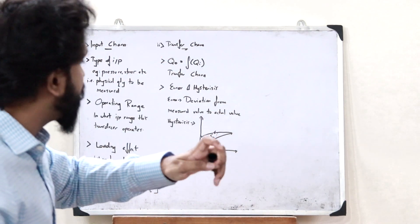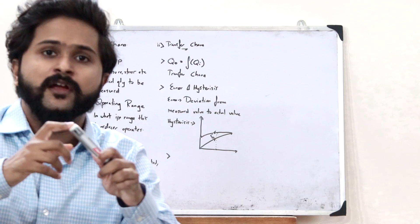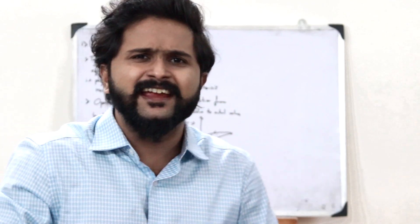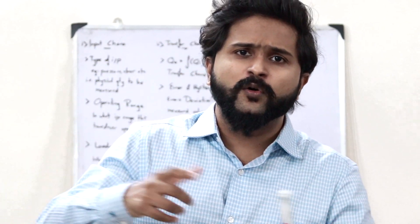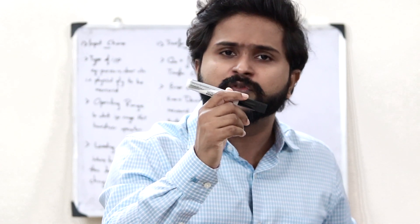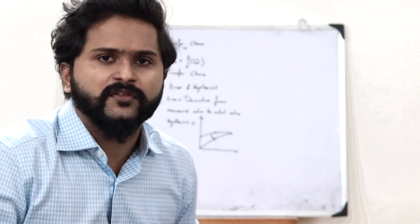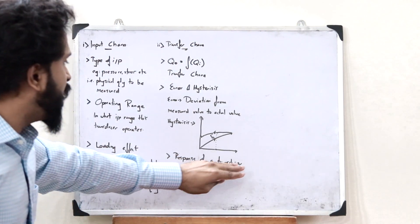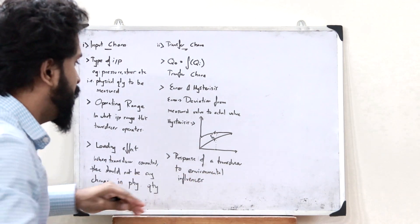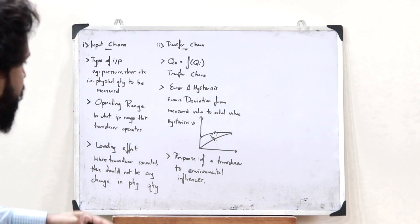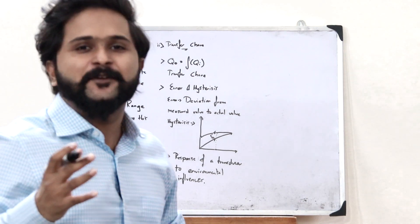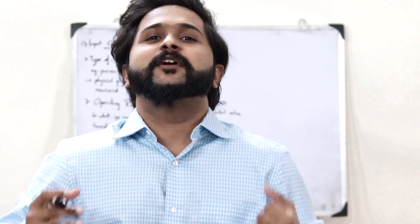The last thing under transfer characteristics is the response of this particular transducer to the environment. Environmental influences like disturbances, rain, or temperature differences — how vulnerable is this transducer to all these environmental influences? That is the final consideration under transfer characteristics. Now, the next thing to keep in mind is the output characteristics.